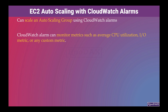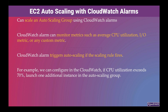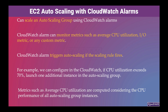The CloudWatch alarm triggers autoscaling if the scaling rule fires. For example, we can configure in CloudWatch: if CPU utilization exceeds 70%, launch one additional instance in the autoscaling group. Metrics such as average CPU utilization are computed considering the CPU performance of all autoscaling group instances.